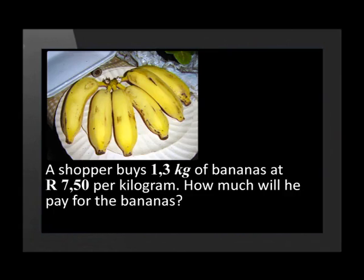Usually an exam question will also link a cost factor to a mass question. For example, a shopper buys 1.3 kilograms of bananas at seven rand fifty per kilogram. How much will he pay for the bananas? We need to multiply the mass of 1.3 kilograms by the price of seven rand fifty per kilogram. The answer comes to nine rand seventy five.